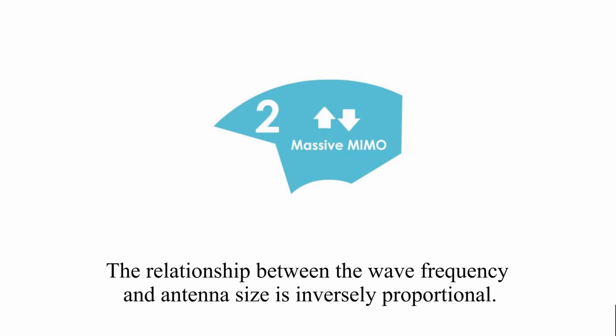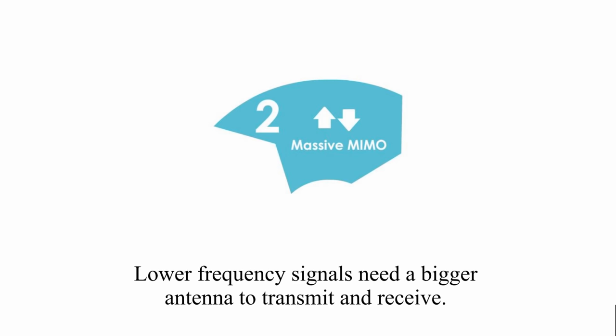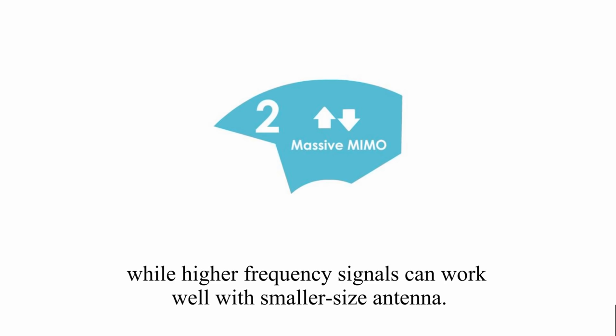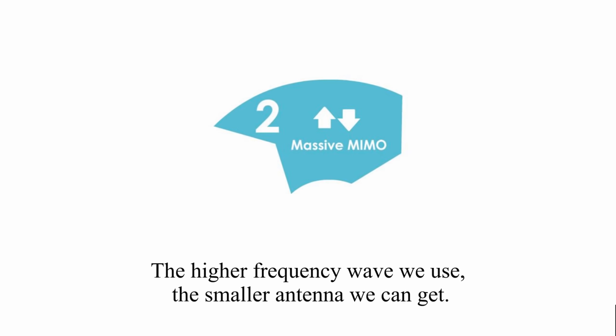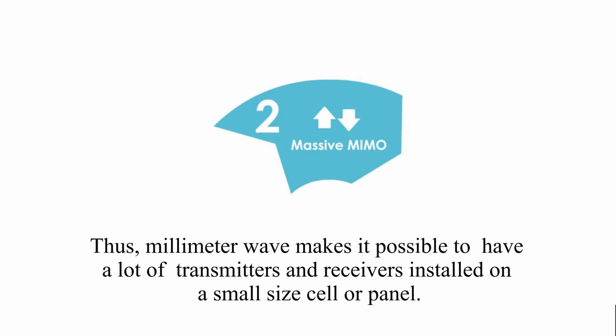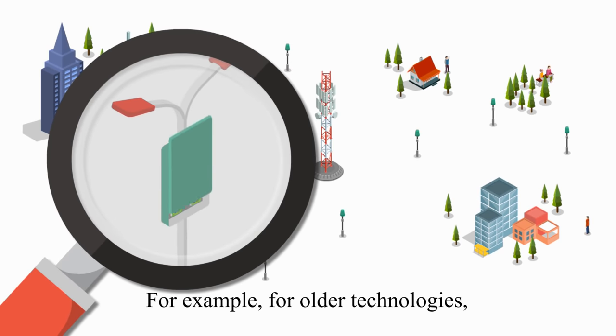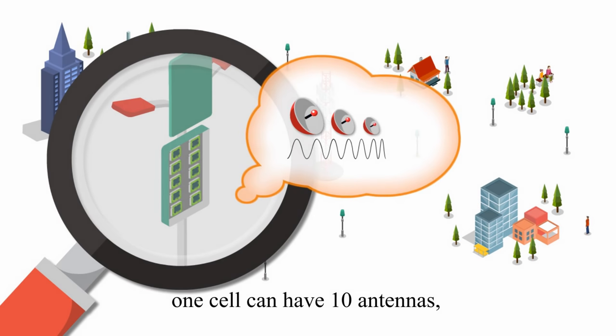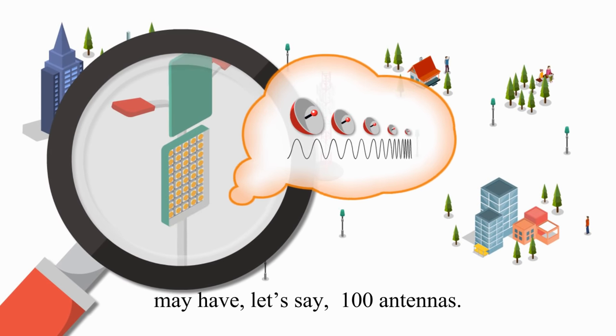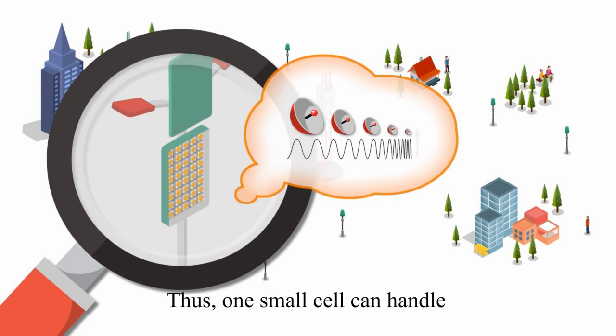The relationship between wave frequency and antenna size is inversely proportional, which means lower frequency signals need bigger antennas to transmit and receive, while higher frequency signals can work well with smaller size antennas. The higher frequency wave we use, the smaller antenna we can get. Thus, millimeter wave makes it possible to have many transmitters and receivers installed on a small size cell or panel. For example, for older technologies, one cell can have 10 antennas, but for 5G, the same cell may have, let's say, 100 antennas. Thus, one small cell can handle many more users at the same time.